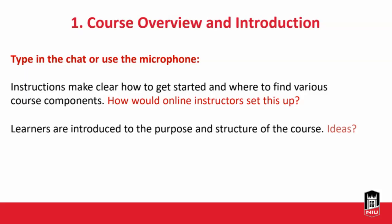Now let's look at specific criteria from each of the eight sections. The first criterion from course overview and introduction: as soon as students come into your course, they should have an introduction with instructions that make clear how to get started and where to find various course components. How would you set this up in your online course?